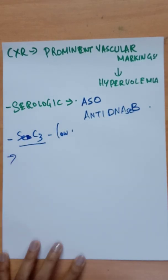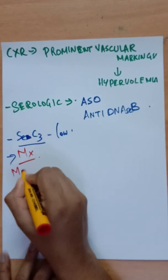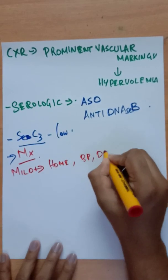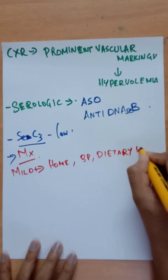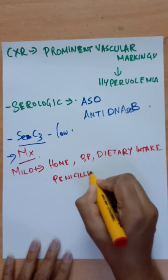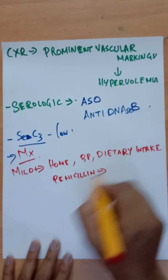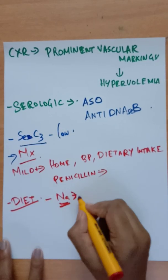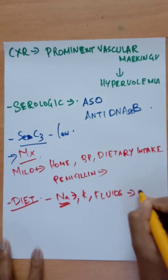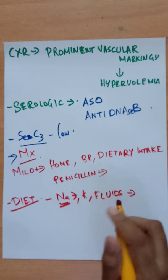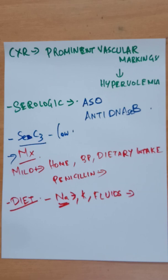Regarding management: mild cases with mild oliguria and normal blood pressure can be managed at home with close attention to BP and dietary intake. Penicillin may be given if active pharyngitis or pyoderma is present, though it has limited effect on nephritis. Sodium, potassium, and fluid intake are restricted until creatinine levels reduce and urine output increases. Fluid intake should equal insensible losses plus 24-hour urine output; over-hydration may increase the risk of hypertension.